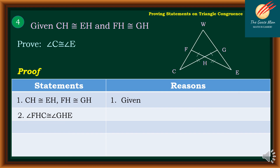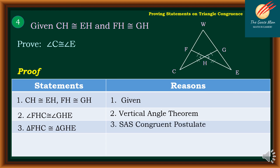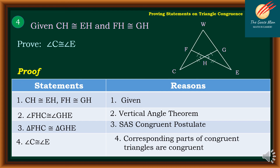Statement two: angle FHC is congruent to angle GHE — reason: vertical angle theorem. Statement three: triangle FHC is congruent to triangle GHE — reason: side-angle-side congruence postulate. Statement four: angle C is congruent to angle E — reason: corresponding parts of congruent triangles are congruent.